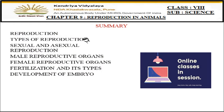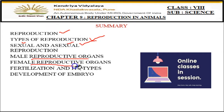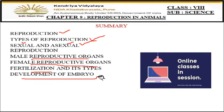Today we have discussed reproduction and its two types — sexual and asexual — the male and female reproductive organs, fertilization as the fusion of sperm and egg, and how the embryo develops and gets attached to the wall of the uterus. Please read the lesson from your textbook, go through the diagrams, stay home, stay safe, and keep learning.